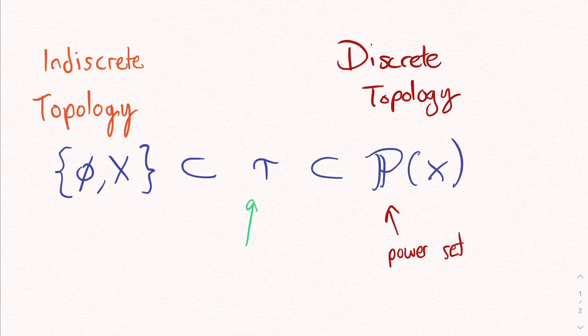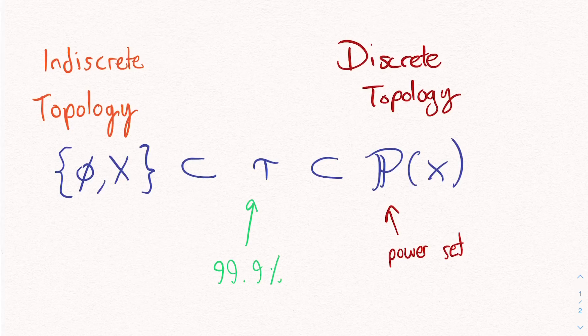So the thing is, 99.9% of the time, we're interested in topologies that lie between these two examples. Pretty much all of the interesting dynamics occur in this zone.